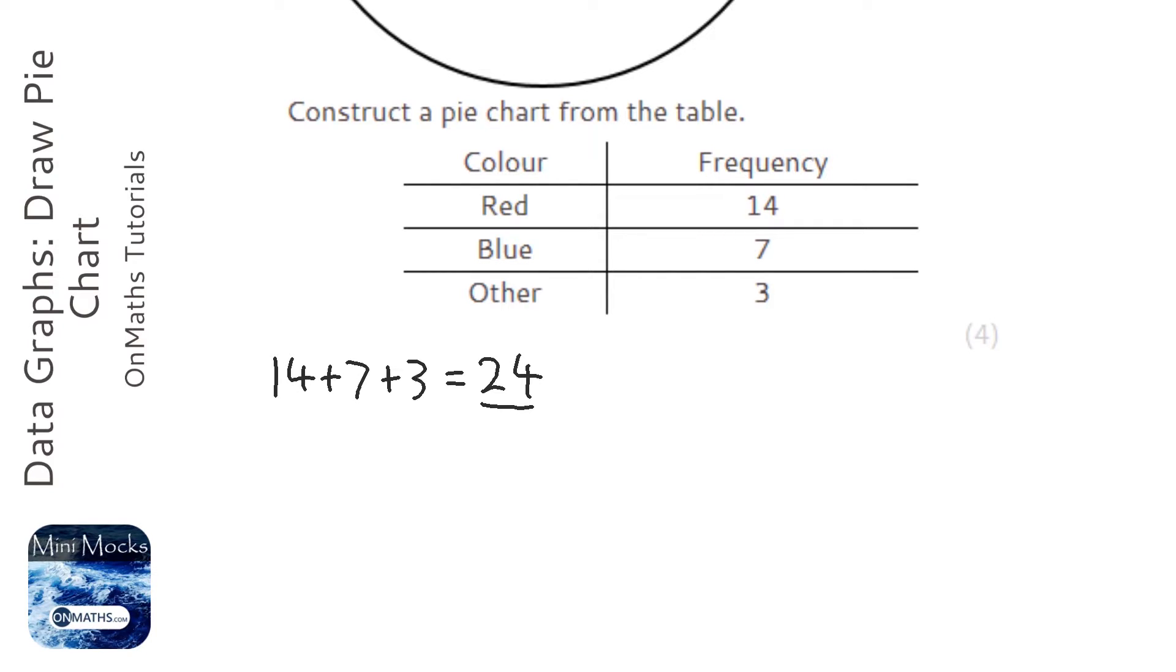We do that really simply by doing the calculation. 360 divided by whatever the total of the frequencies are. So 360 divided by 24 on the calculator equals 15.